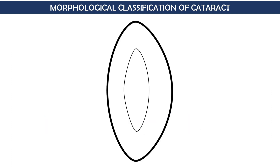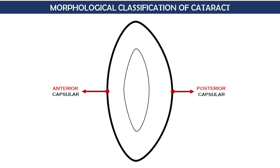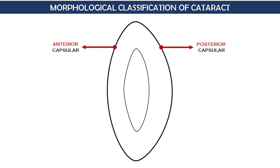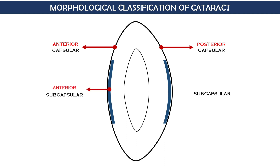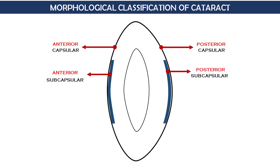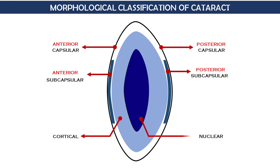Now let's see the classification of cataract based on morphology or anatomy of the lens, which includes anatomical landmarks of the lens. Starting with capsular cataract — as per its name, it involves the lens capsule, and can be anterior or posterior capsular cataract. Then we have subcapsular cataract, in which the superficial-most part of the cortex just beneath the capsule is involved — this can be anterior or posterior subcapsular. Then there is cortical cataract, which majorly involves the cortex, and nuclear cataract, which involves the lens nucleus.